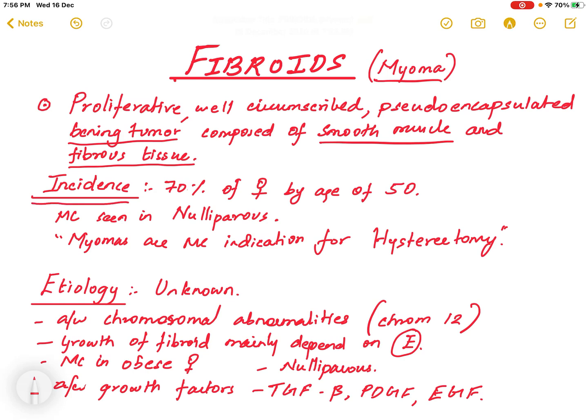Almost 70% of females by the age of 50 develop fibroids. Despite this, most are extremely small in size and asymptomatic, diagnosed incidentally during clinical examination or imaging. They are most commonly seen in nulliparous women, and myomas are the most common indication for hysterectomy.